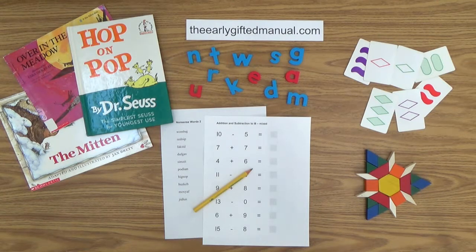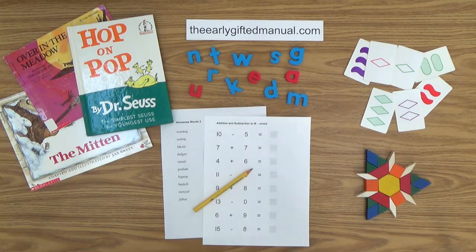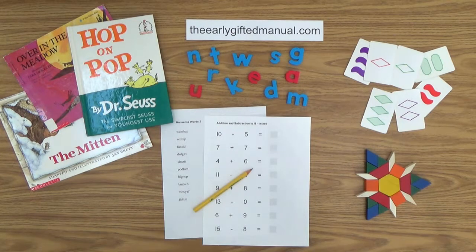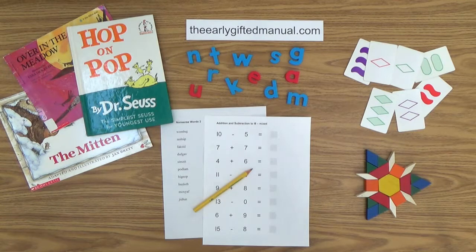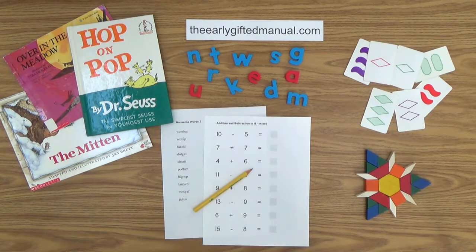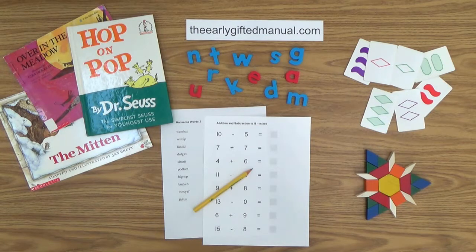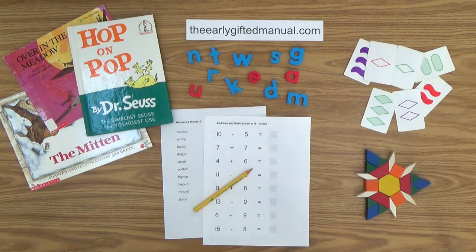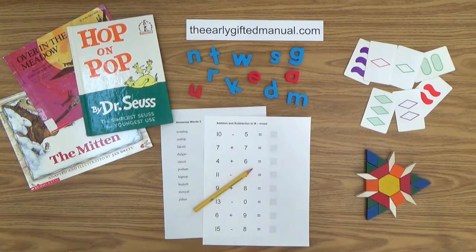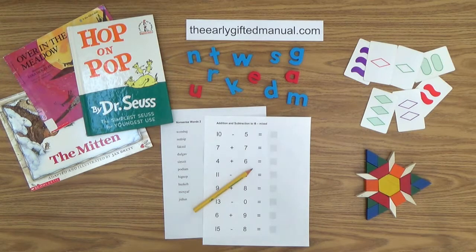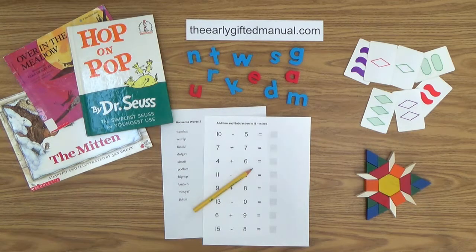As the video lessons are designed to work in conjunction with the program on my website, I ask you to, at some point, click on the URL link in the description box below and this action will take you to theearlygiftedmanual.com. By doing that, you will be able to put this lesson and all of the video lessons here on my channel in the proper context of the total program that I am presenting to you and your child.